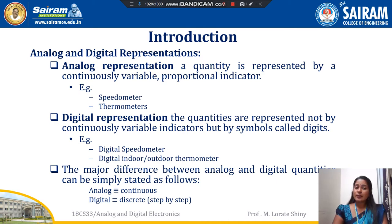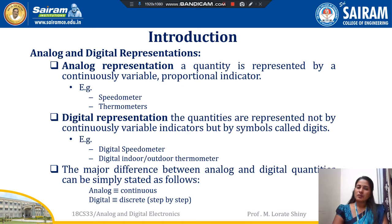In digital representation, the quantities are not represented by a continuously variable indicator. They are represented by symbols called digits. Digits are zeros and ones. Example: digital thermometer and digital speedometer; their outputs are in digital form. In simple terms, analog is a continuous signal and digital is a discrete signal, meaning step by step.